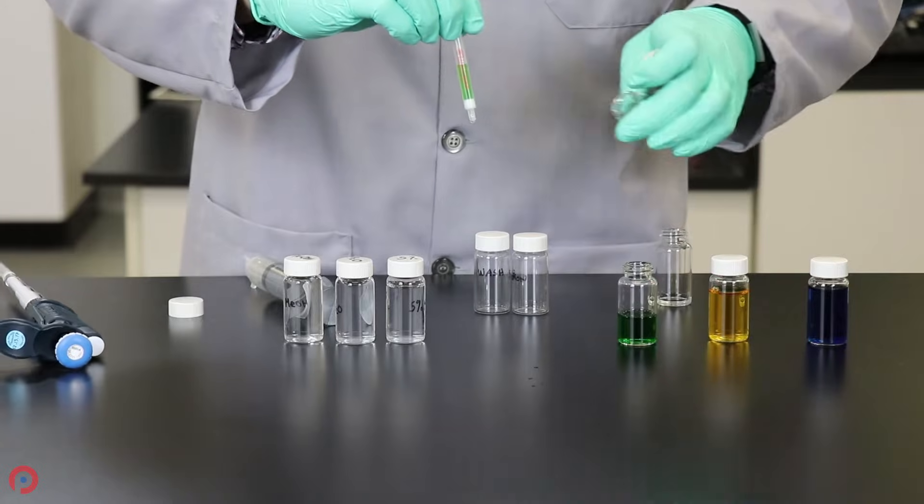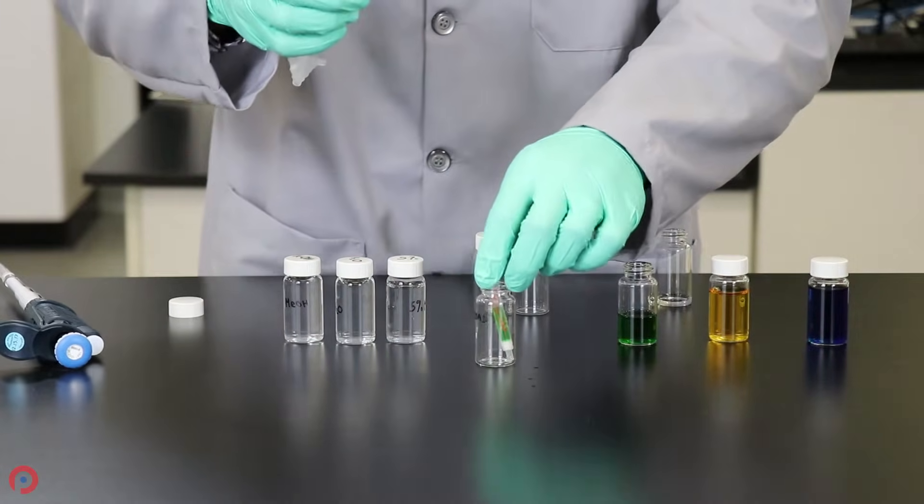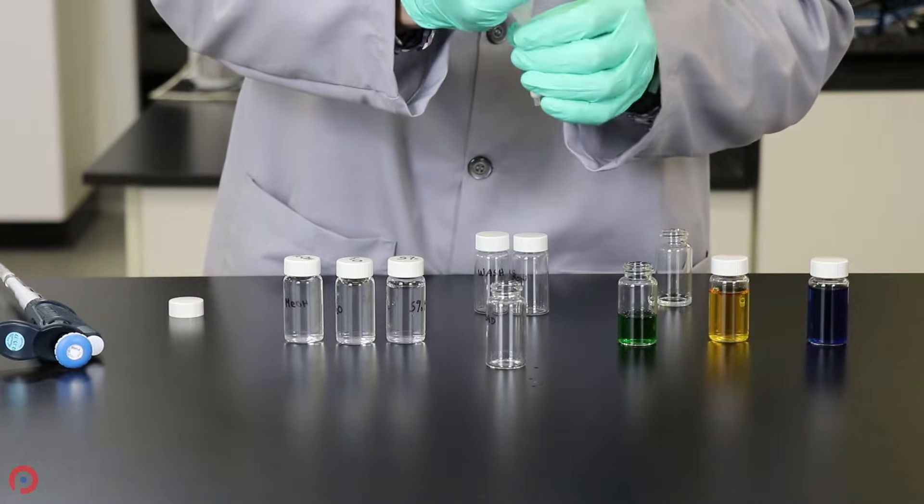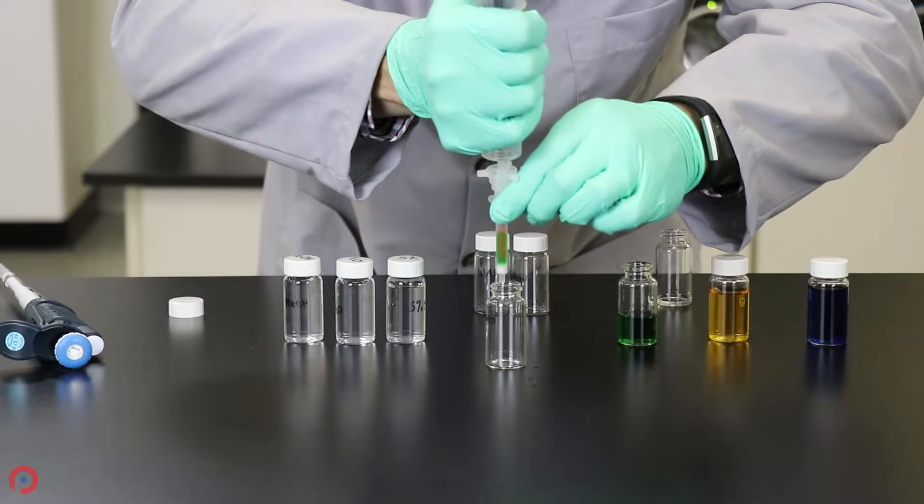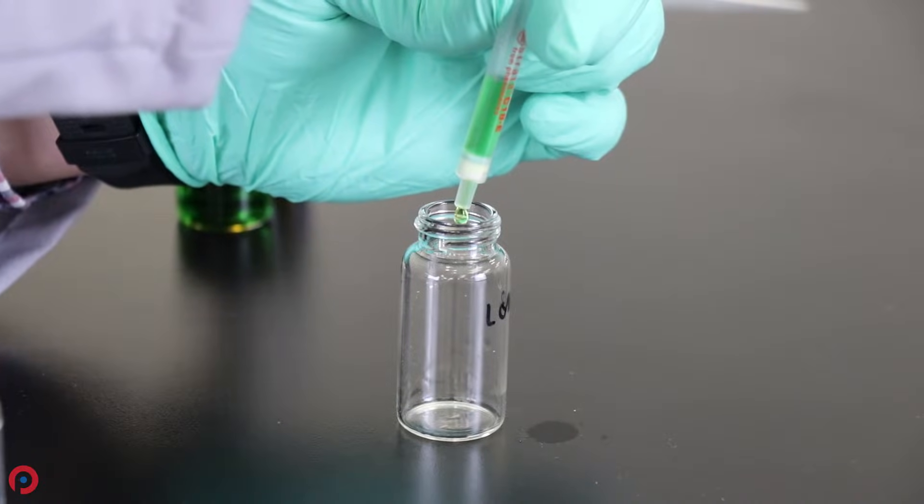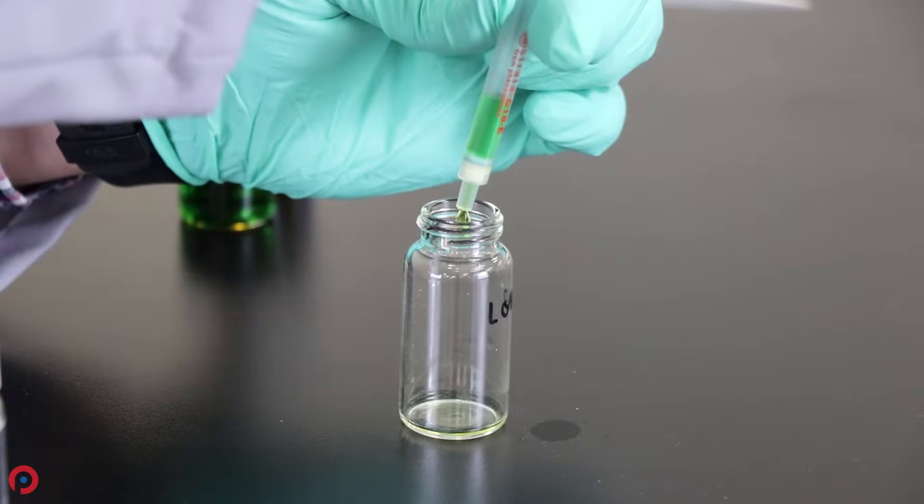We're going to load our sample onto the SPE cartridge and, again, flow rate is very critical in this particular step. We want to be sure that we're aiming for one to two mils per minute or a drop or two per second. I'm going to be real careful with how slowly we're doing this. You'll notice that there is a really tight blue band that is starting to form at the top of the cartridge.